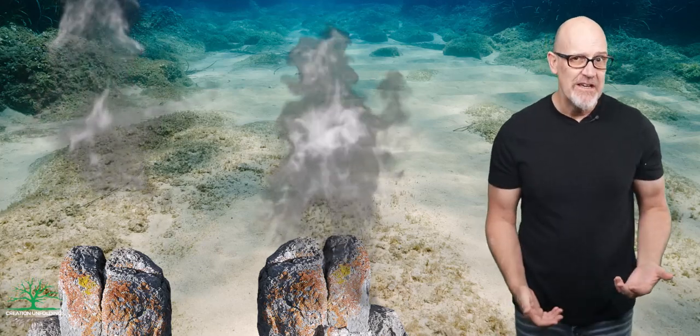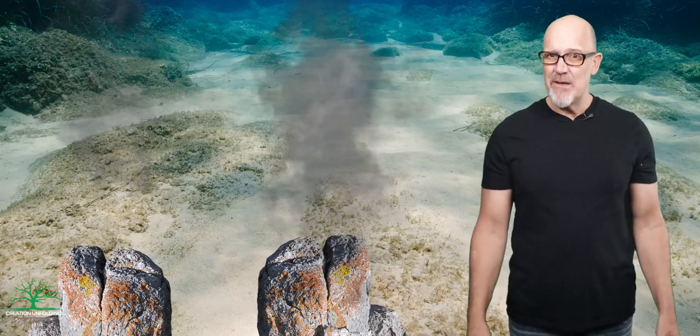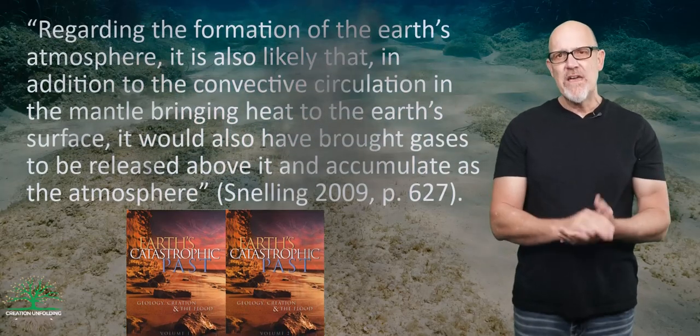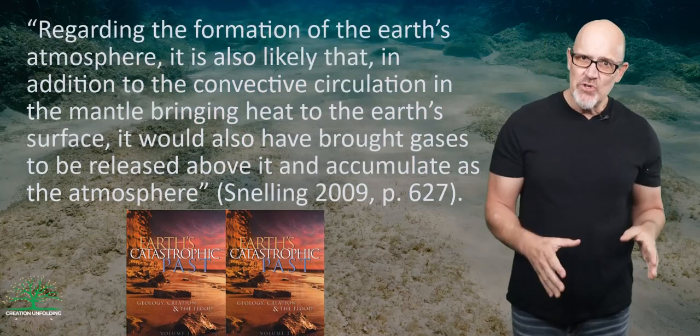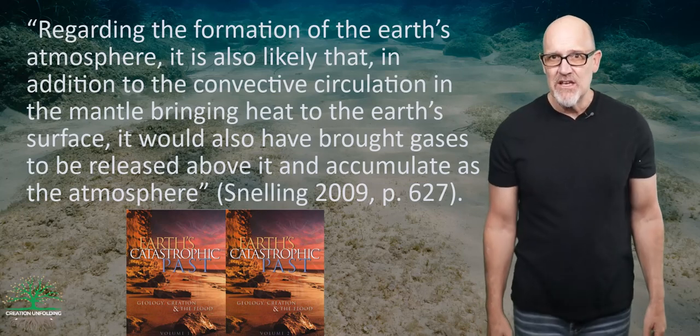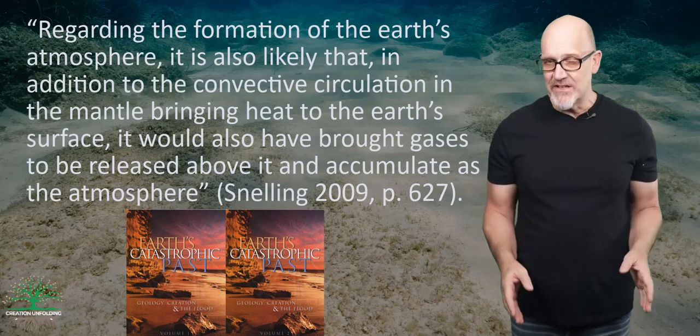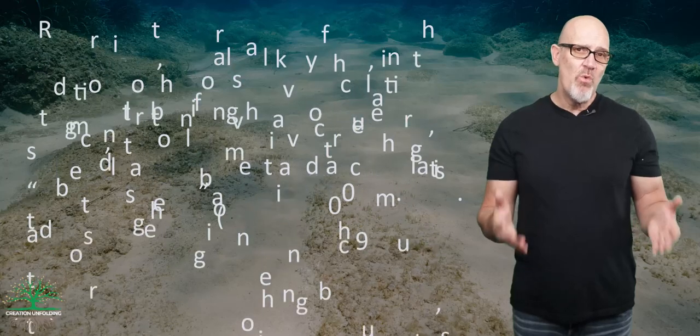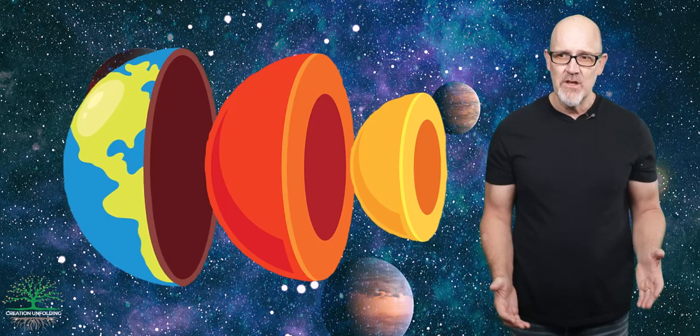Similarly, the atmosphere may have been created as photosynthetic microbes that made the stromatolites produced Earth's oxygen. Andrew Snelling of Answers in Genesis has postulated something like this, suggesting that convective circulation in the mantle bringing heat to the Earth's surface would also have brought gases released above it to accumulate as the atmosphere. What I'm suggesting is a creation week that consistently differentiated or separated out one natural system from another until all Earth's systems were fully functional.